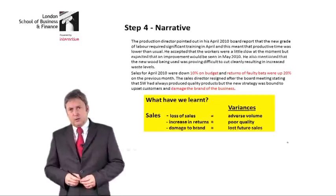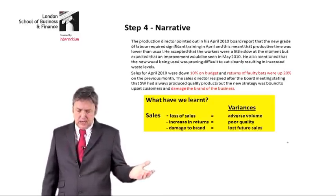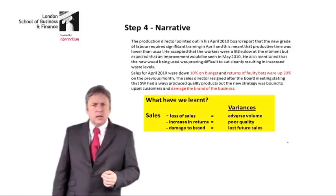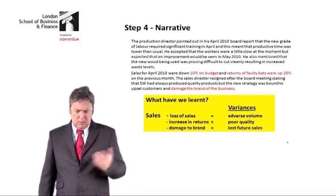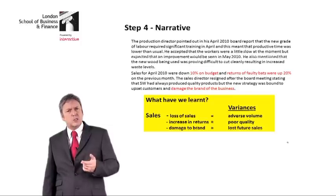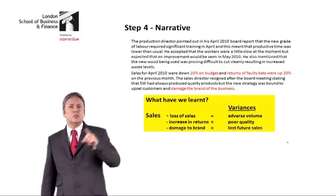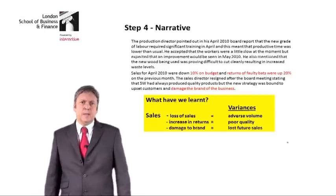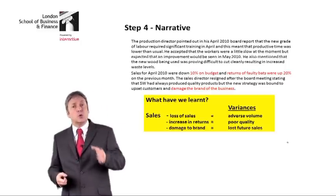Interestingly, in the final paragraph we are told sales were 10% down on budget — sales volume is down. And returns of faulty bats were up by 20%. Critically, the sales director is very unhappy and says this is going to damage the brand of the business. My suggestion is that the loss of sales will lead to an adverse volume variance, the increase in returns is a key indicator of poor quality, and the damage to the brand will lead to lost future sales. We only had seven marks to score here and I think we've easily got more than enough things to say.